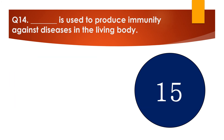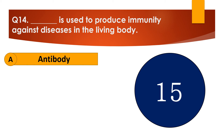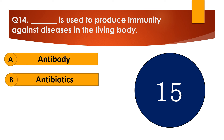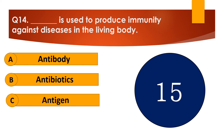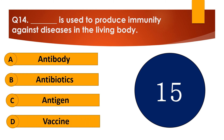Question number 14. Dash is used to produce immunity against diseases in the living body. The options are: A. Antibody, B. Antibiotics, C. Antigen, or D. Vaccine.